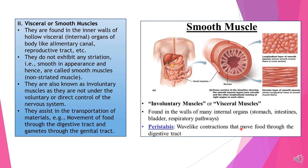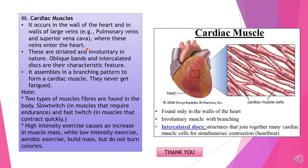Smooth muscles assist in transportation of materials — movement of food through the digestive tract and gametes through the genital tract. They are found in the walls of many internal organs like the stomach, intestines, urinary bladder, and respiratory pathways. Peristalsis — the wave-like contraction — moves food through the digestive tract continuously.